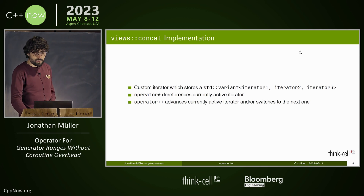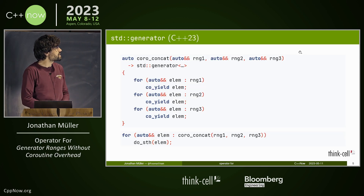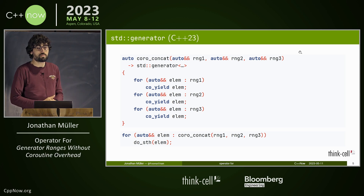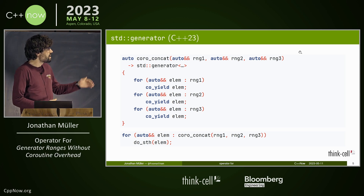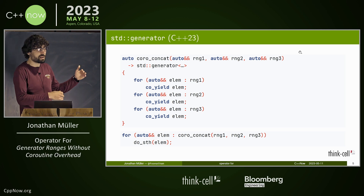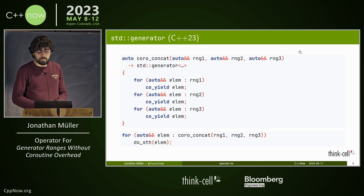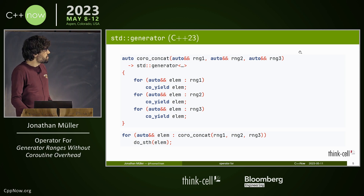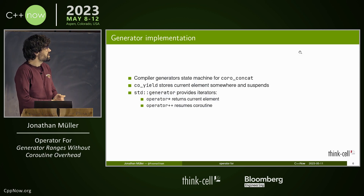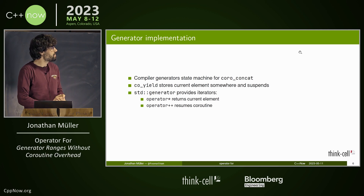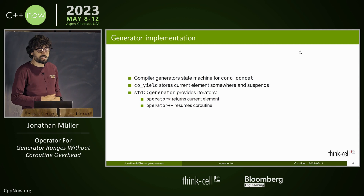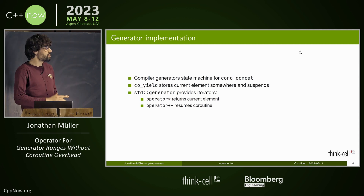Luckily, since C++23, there's an easy way to do that. We can just write a coroutine — use the generator, write the three full loops, and co_yield each individual element. We still get the same interface, but the implementation actually fits on the slide. The compiler generates a state machine for us. When we call co_yield, it stores the current element and suspends. The generator provides iterators: operator* returns the stored element, and operator++ resumes the coroutine to compute the next one.